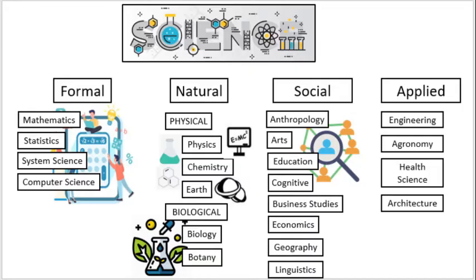Social science talks about the study of the behavior of human beings. Under here, there are different branches: anthropology, arts, education, cognitive, business studies, economics, geography, and linguistics. Social science studies more on the behavior and activity of human being.